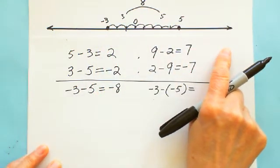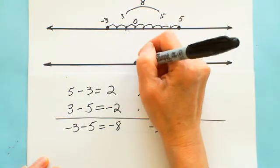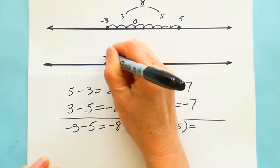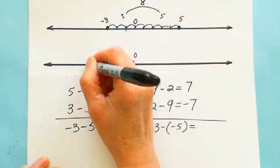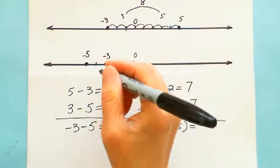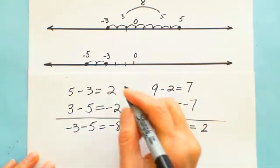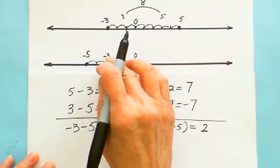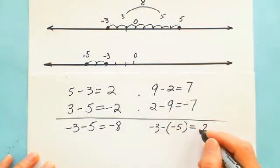Another example: negative 3 subtract negative 5. On the number line, negative 5 is on the left side of negative 3. Once you label these two points, you see the distance is 2 units. Because negative 3 is on the right side of negative 5, negative 3 is greater — closer to zero means greater. So big number subtract small number gives you positive 2.